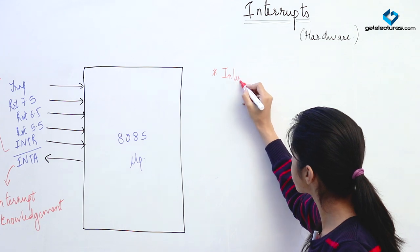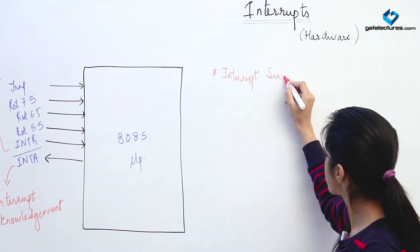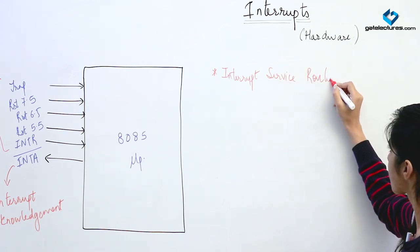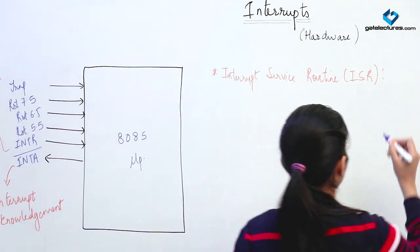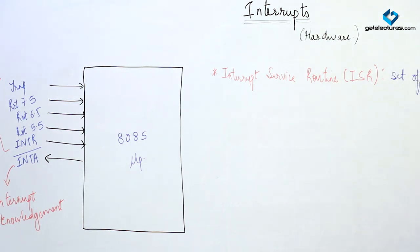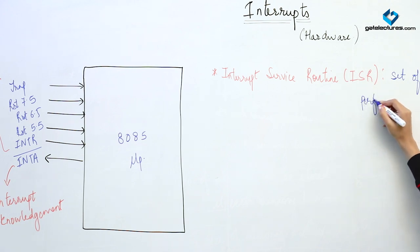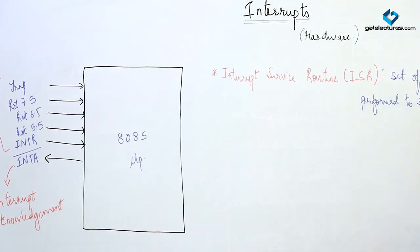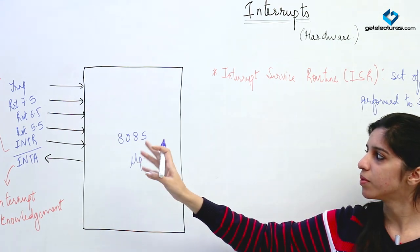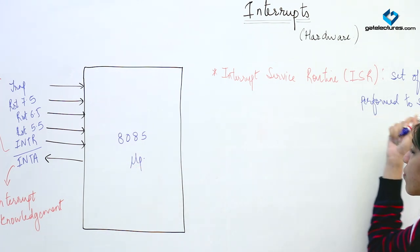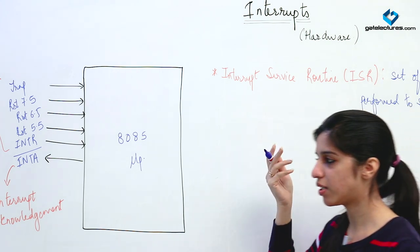There is a term known as interrupt service routine, or ISR. ISR is a set of instructions to be performed to service the interrupt. They are going to be saved in some particular memory location, and whenever you raise an interrupt the microprocessor will route the program and these particular set of instructions that are saved are to be executed — that is known as ISR or interrupt service routine.